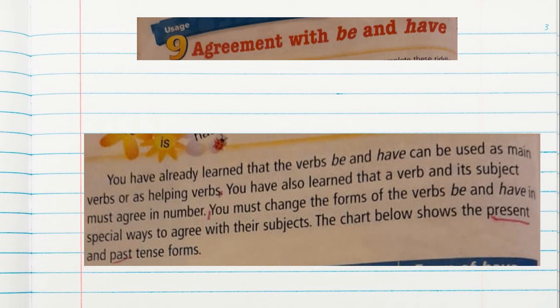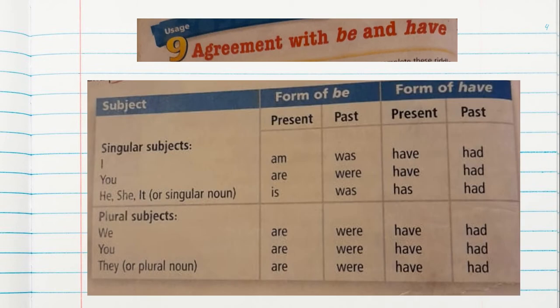Pay attention and copy the next chart on your notebook. Here we have the subjects. If the subject is I, you use the form of the verb be: am. You say I am in present. But if you're going to write the same subject I in past, it will be I was.